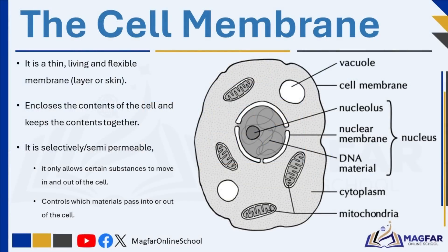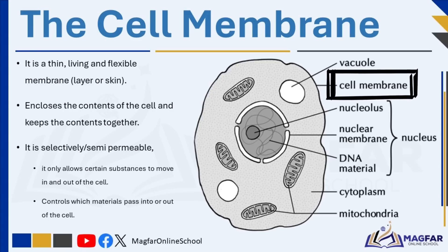The cell membrane works in a similar way for the cell. It is a thin, living, and flexible layer that surrounds the cell, keeping all its contents together, just like a fence around a schoolyard. One of its most important roles is to control what moves in and out — it is selectively permeable, allowing only certain substances to pass through. For example, it lets oxygen, water, and nutrients enter while allowing waste materials like carbon dioxide to exit. Without the cell membrane, the cell could not maintain a stable environment, and harmful substances could enter freely.